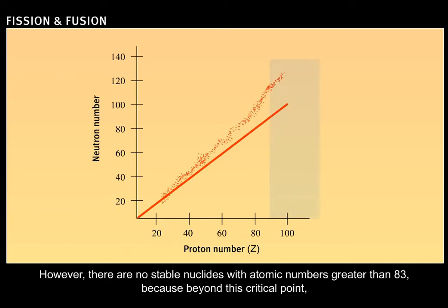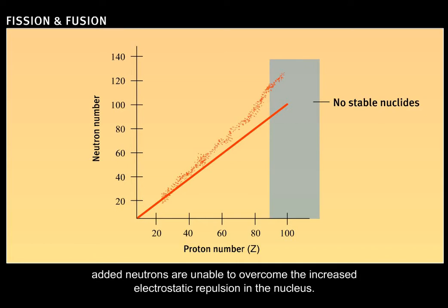However, there are no stable nuclides with atomic numbers greater than 83, because beyond this critical point, added neutrons are unable to overcome the increased electrostatic repulsion in the nucleus.